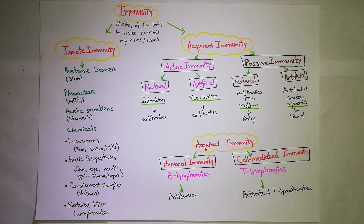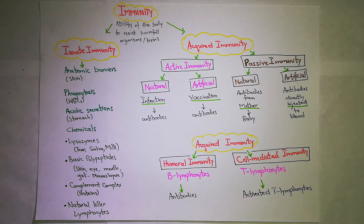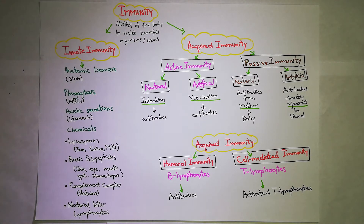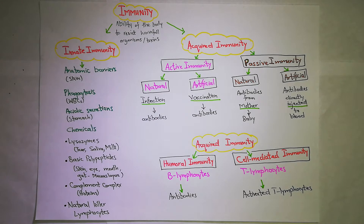Assalamualaikum everyone. This is Guyton Chapter 35, Part 2: Immunity and Allergy. The full name is Resistance of the Body to Infections. In this we have to learn what is immunity and allergy. Immunity is the ability of the body to resist or fight any foreign invader, harmful organism, or toxins that come to the body.